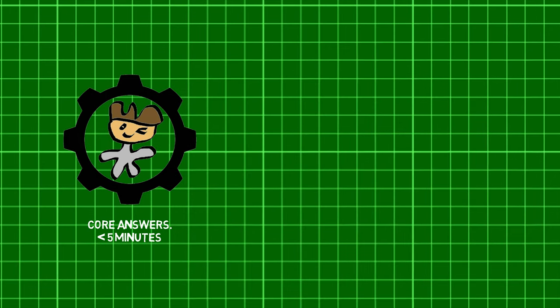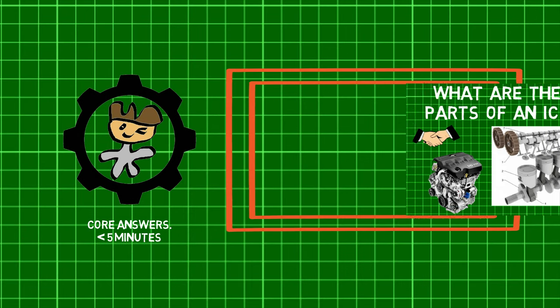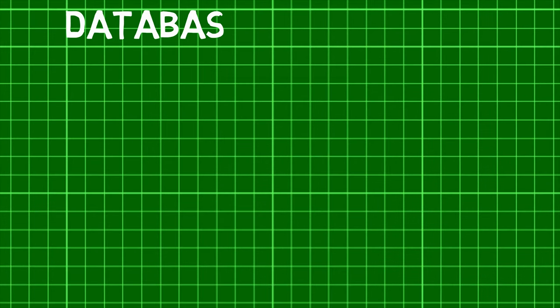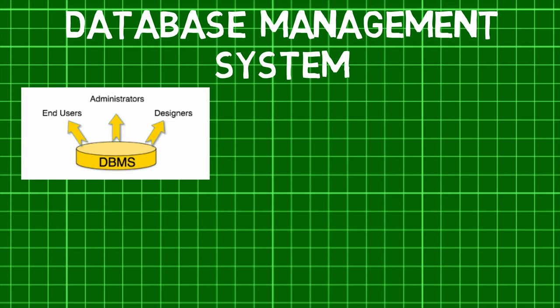Before we jump in, check out the previous part of this series to learn about what a database is. Now, a database management system provides users and programmers with a systematic way to create, retrieve, update and manage data.